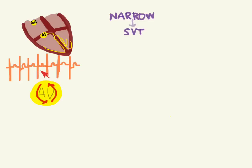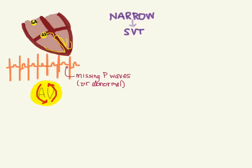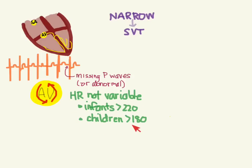With SVT, unlike sinus tachycardia, you'll have a history of sudden onset — palpitations — rather than a clear underlying cause. On the EKG you'll see absent or abnormal P waves. The heart rate tends to be very constant because each cycle fires off a QRS complex at a fixed rate. If a child's heart rate is around 230, chances are that's not sinus tachycardia — that's SVT.